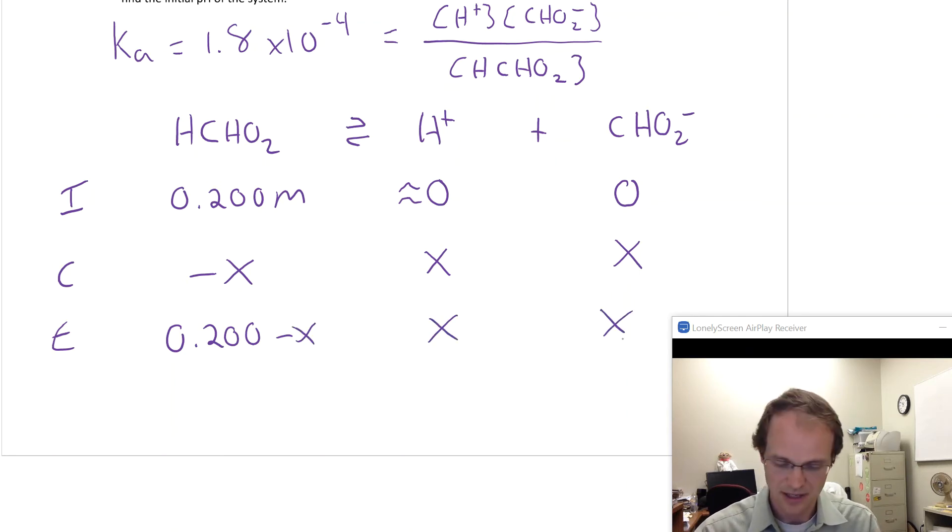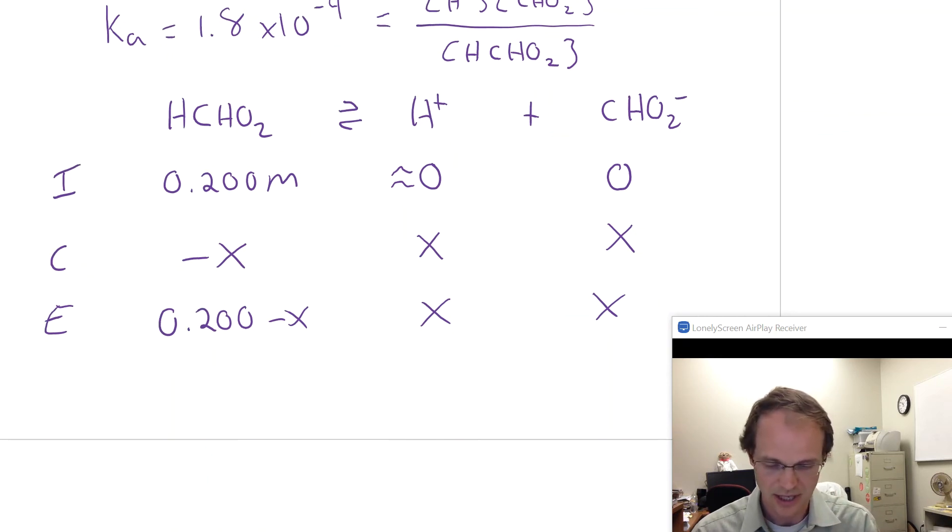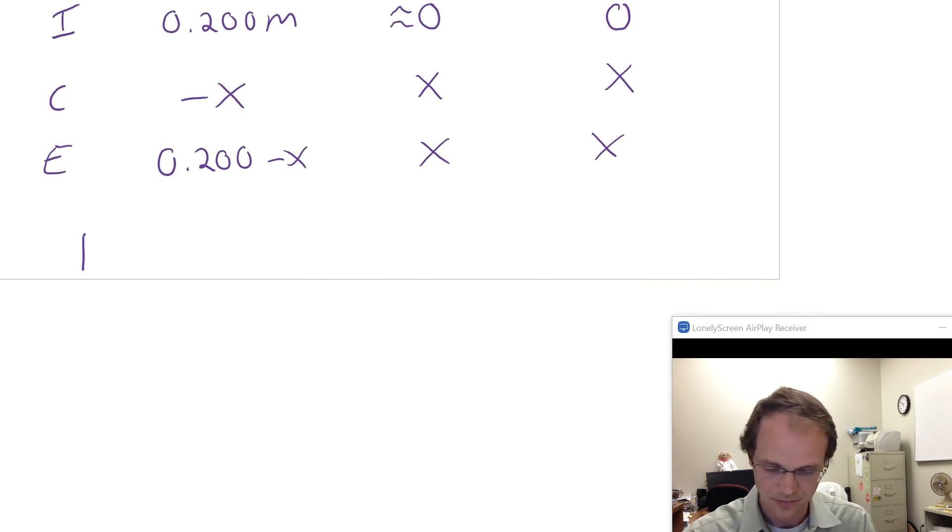Now that we've got that equilibrium line, we can plug that equilibrium line straight into our expression for K. Ka is 1.8 times 10 to the minus 4th, and it's those concentrations: the concentration of H plus, the concentration of the formate ion, and then the concentration of formic acid.